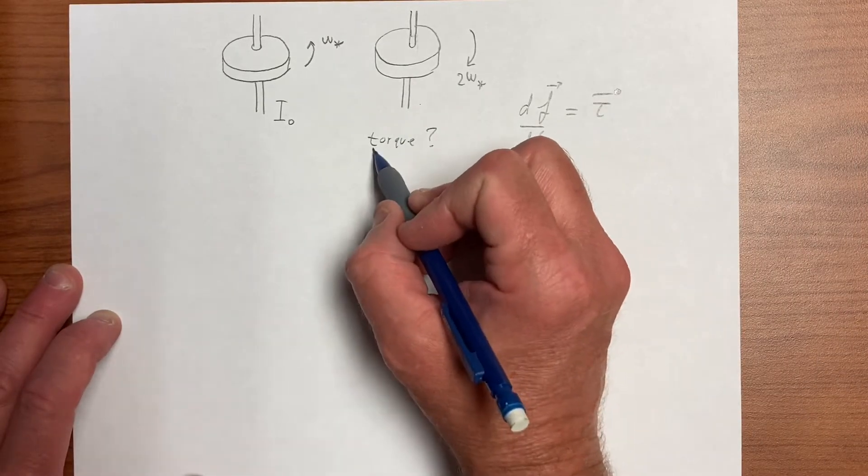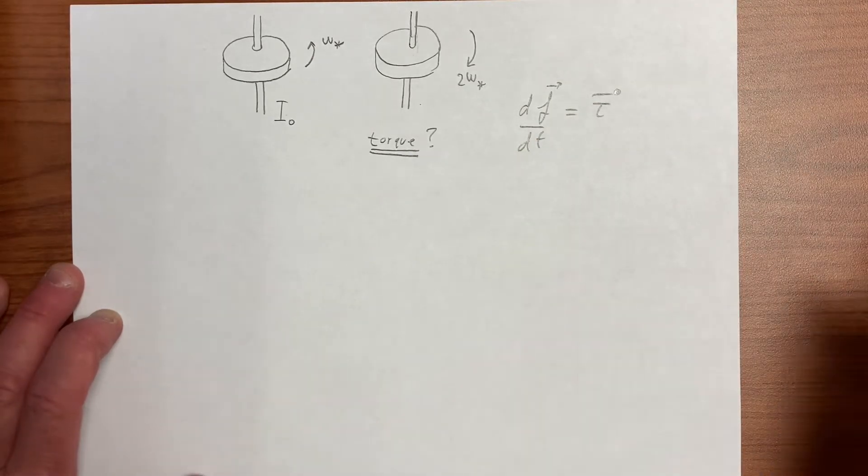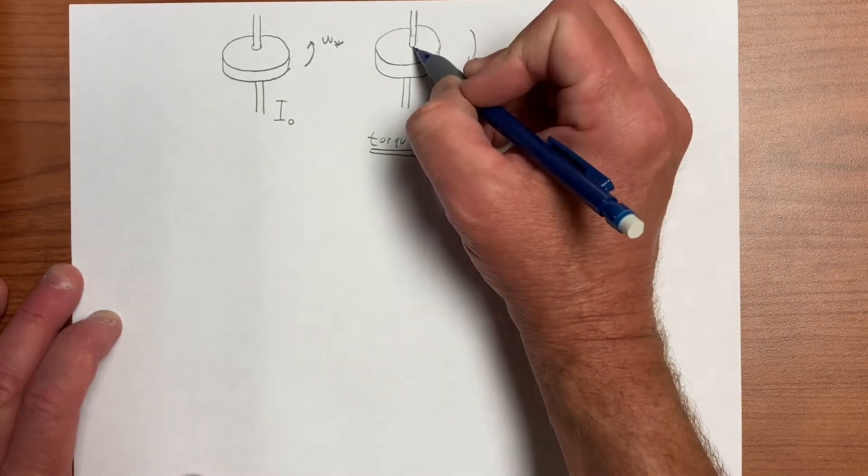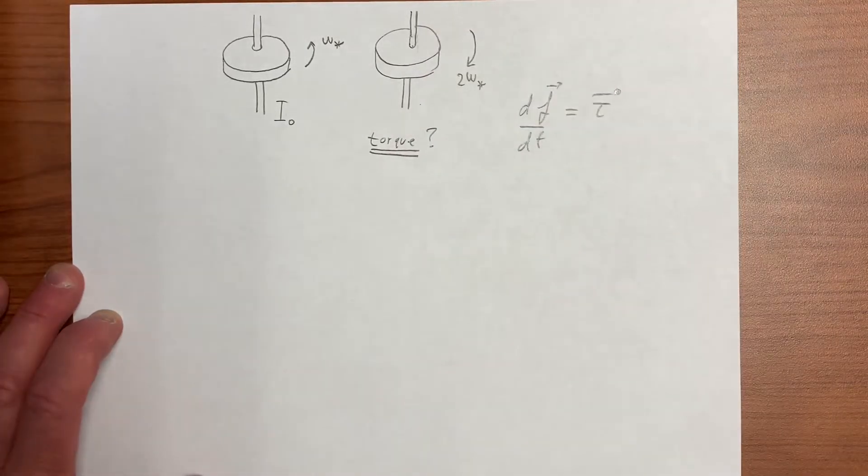So first we should specify what we mean by the torque about which point or which axis, and we mean about this axis here, about the center of these disks or cylinders.